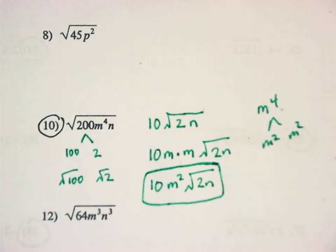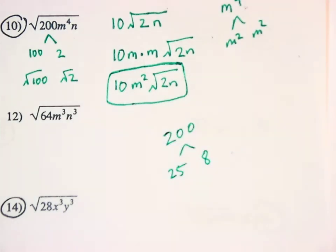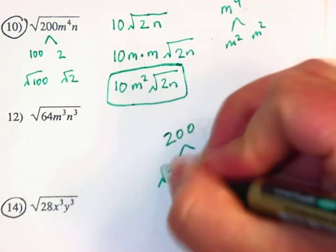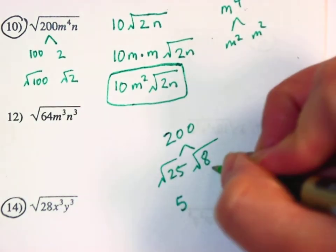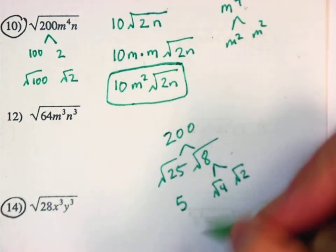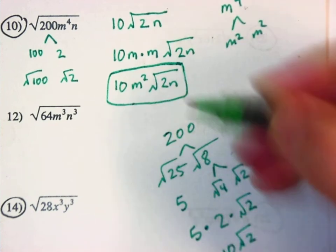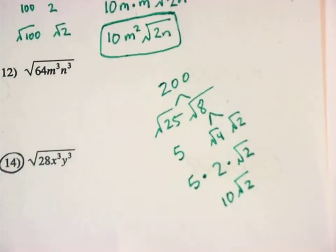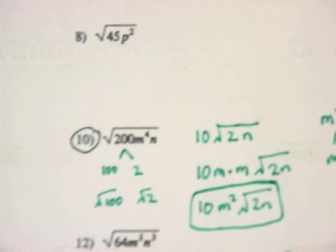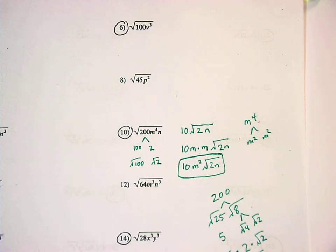Let's say you broke it down differently — you said 200 is 25 times 8, since 25 is also a perfect square. The square root of 25 is 5, and 8 breaks down to the square root of 4 times the square root of 2, and the square root of 4 is 2. So it's 5 times 2 times the square root of 2, which is 10 times the square root of 2 — the same result. The answer is 10m² times the square root of 2n.